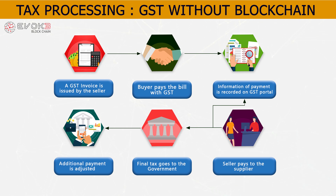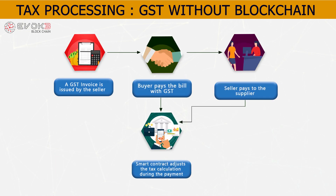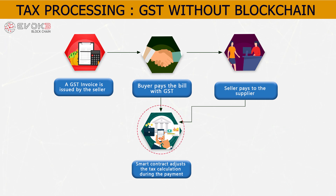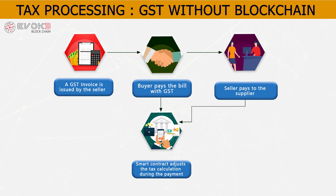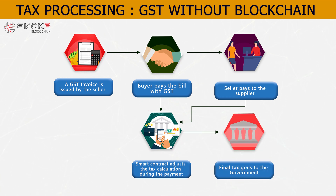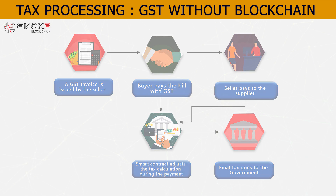Now let's see how blockchain could be implemented in such a system. During payment for a good or service, a blockchain smart contract calculates the invoice based on the tax amount already determined in the production process. The smart contract directly transfers the tax amount to the tax authority, and any refund is directly paid to the customer's account.